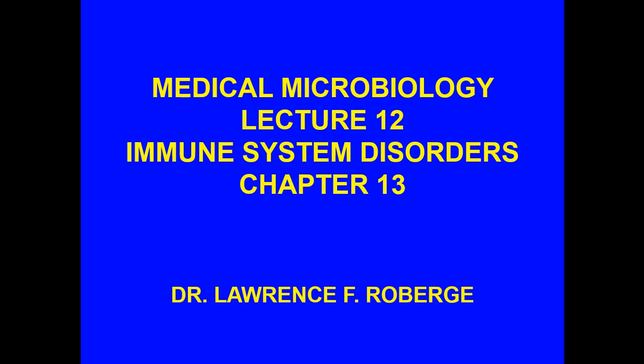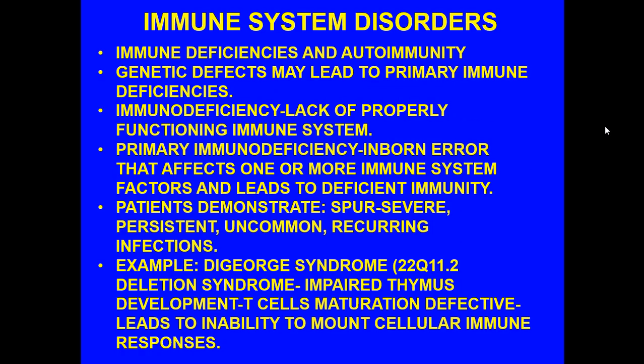Today we're going to explore immune system disorders. This is lecture 12, and you will find the material in chapter 13. What you have to keep in mind is that immune system disorders could be diminished immune efficiency, or it could be an overactive immune system leading to autoimmunity, where the immune system damages or begins destroying your own tissues. A lot of times primary immune deficiencies are caused by genetic defects — a gene defect that may interfere with various components of the immune system. We're going to focus on immunodeficiency first and deal with autoimmunity and hypersensitivity afterwards.